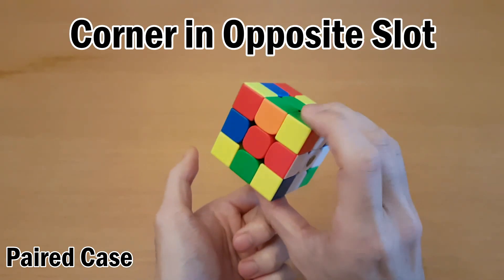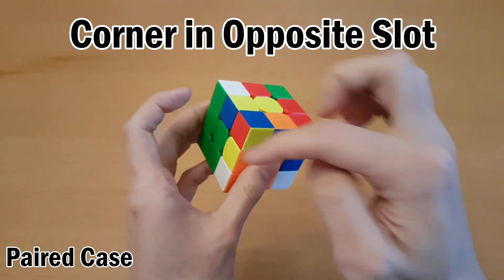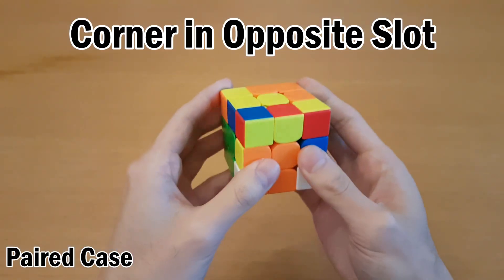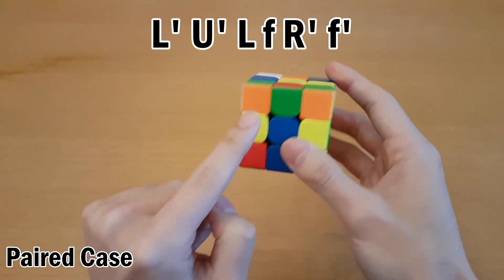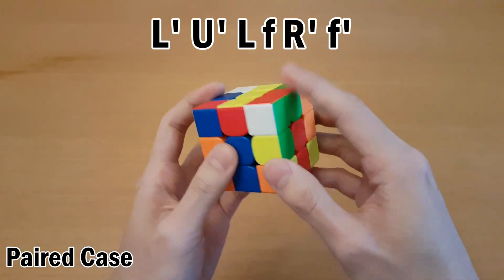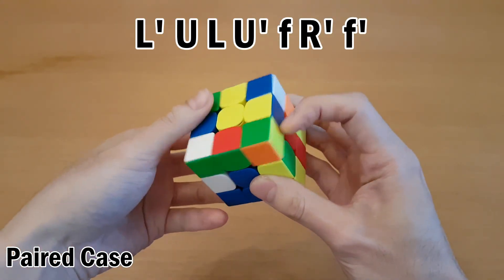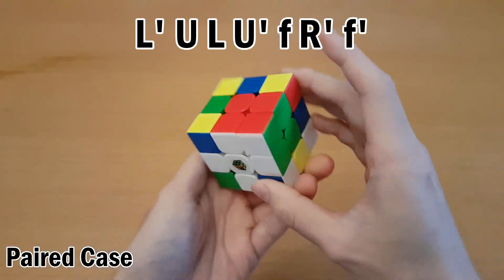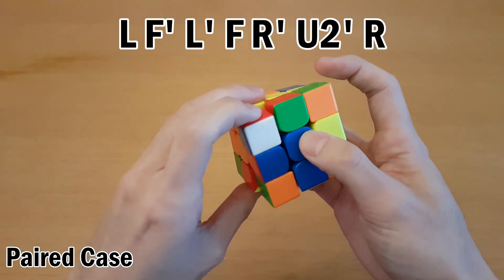If the corner is in the opposite slot of where it should go, and this edge is misoriented, which means normally you would need a cube rotation to do some kind of rotationless stuff, you can actually use this technique to always get a rotationless solution. For this case, you can just pair them up and then insert here. For this case, you can pair them up this way, and then again just insert. And for this one, we're not using the same idea, but just to round out the cases, you would do sledgehammer.